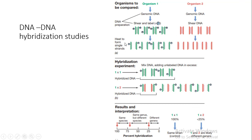Heat treatment is used to convert the double-stranded DNA into single-stranded DNA. Similar treatment is also used with the second organism with which you want to compare your test organism, except we do not do labeling of the DNA from the second organism. Heat treatment will denature both the first organism's and the second organism's DNA.